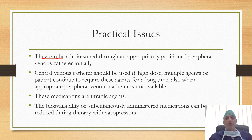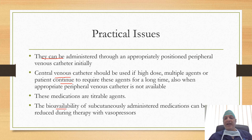They can be administered through an appropriately positioned peripheral venous catheter initially. Central venous catheter should be used if high doses are required, multiple agents are given, or the patient continues to require these agents for a long time. Central venous catheter is also required when an appropriate peripheral venous catheter is not available. The bioavailability of subcutaneously administered medications can be reduced during therapy with vasopressor agents, especially heparin and insulin.